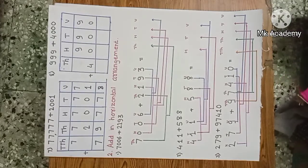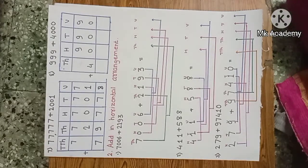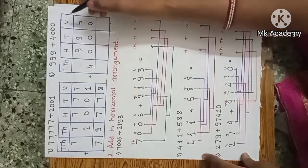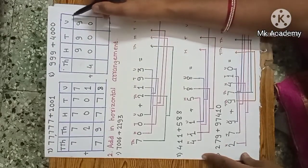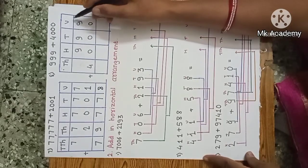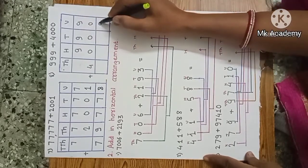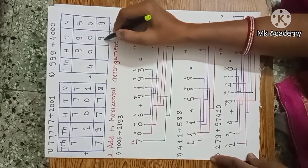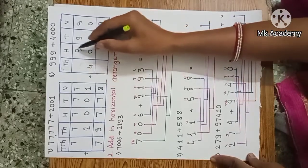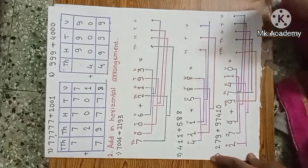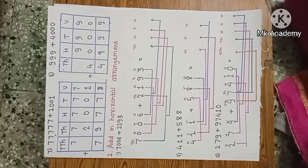Eighth example: 999 plus 4000. We do the vertical arrangement. Always start from unit place: 9 units plus 0 units is 9; tens: 9 plus 0 is 9; hundreds: 9 plus 0 is 9; thousands: 4000. The answer is 4,999.